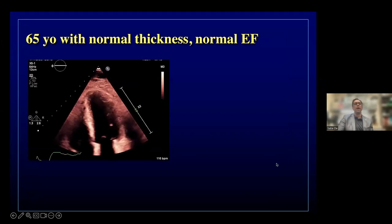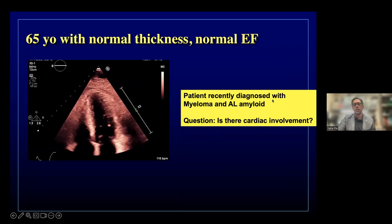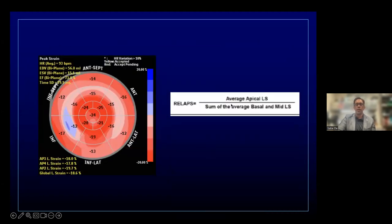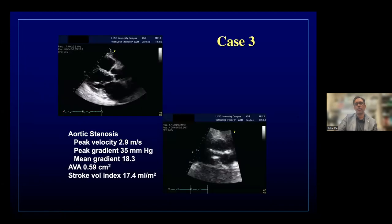Here's an interesting case: a 65-year-old with normal LV thickness and normal ejection fraction, recently diagnosed with myeloma and AL amyloid. The clinical question was whether there was cardiac involvement. Strain analysis showed apical sparing. Using the relative apical strain (RELAPS) score — average apical longitudinal strain divided by the sum of average basal and mid longitudinal strain — a ratio above 1.5 to 2 is very suggestive of possible cardiac amyloid. This patient did have cardiac involvement despite normal thickness. About 15% of patients with cardiac amyloid can have normal LV thickness, and this patient expired a few months after the echocardiogram.